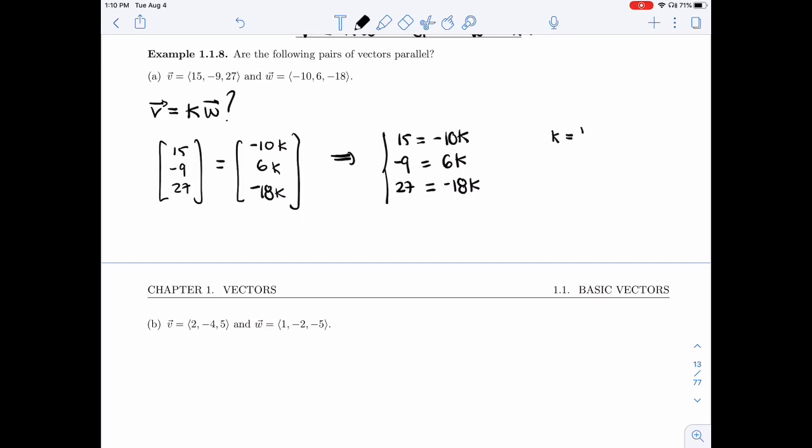The first one will give me 15 over minus 10, which is minus 3 halves. The second one will give me minus 9 over 6, which is minus 3 halves. And the third one is 27 over minus 18. That's minus 3 halves.